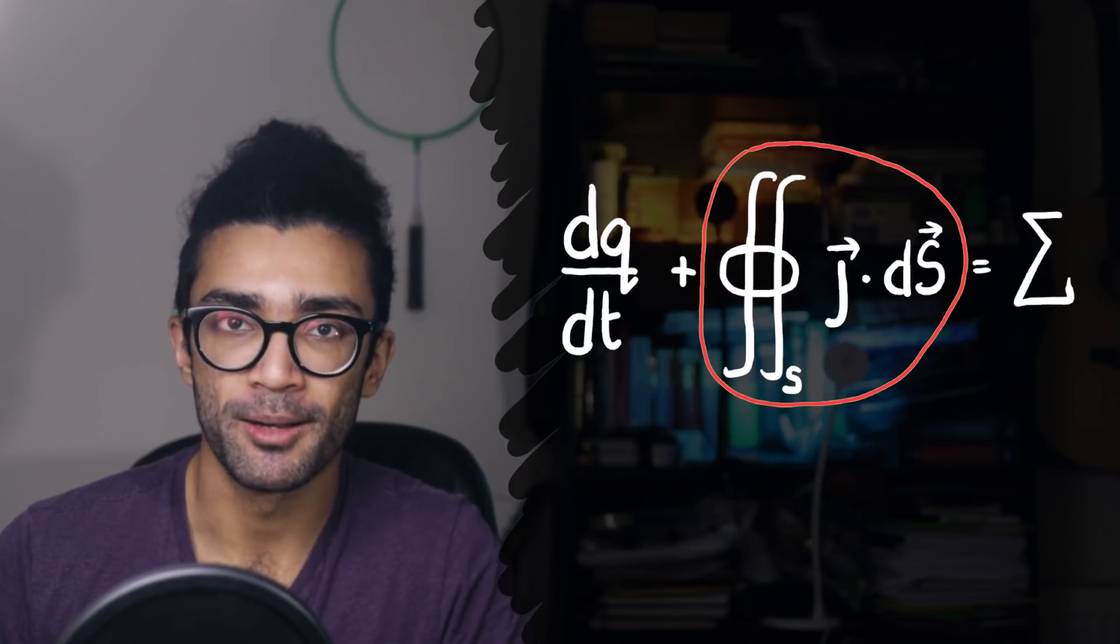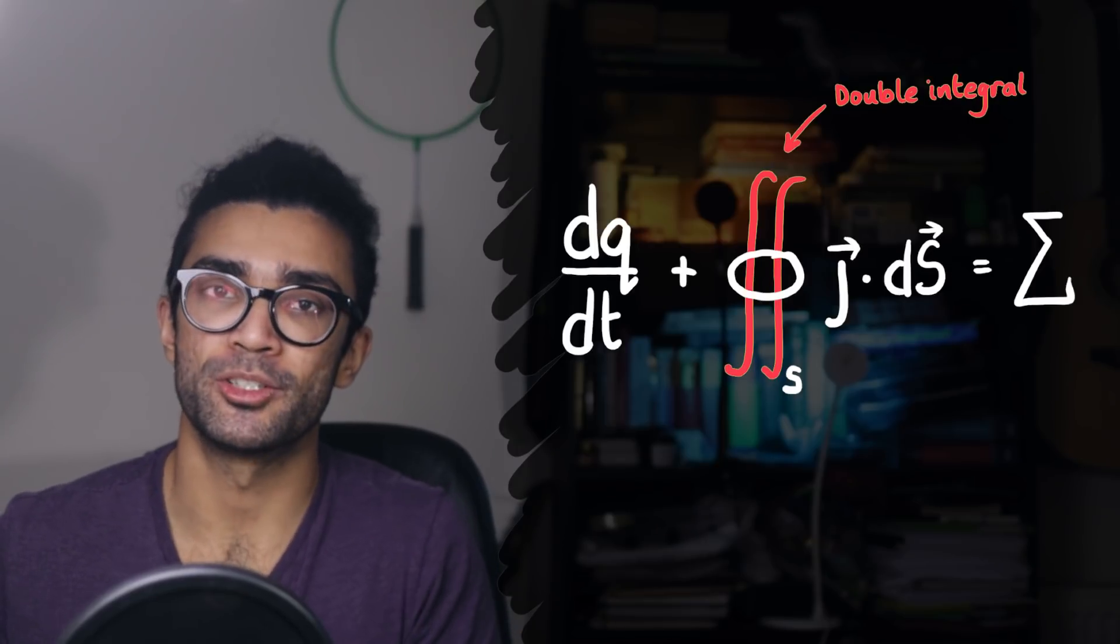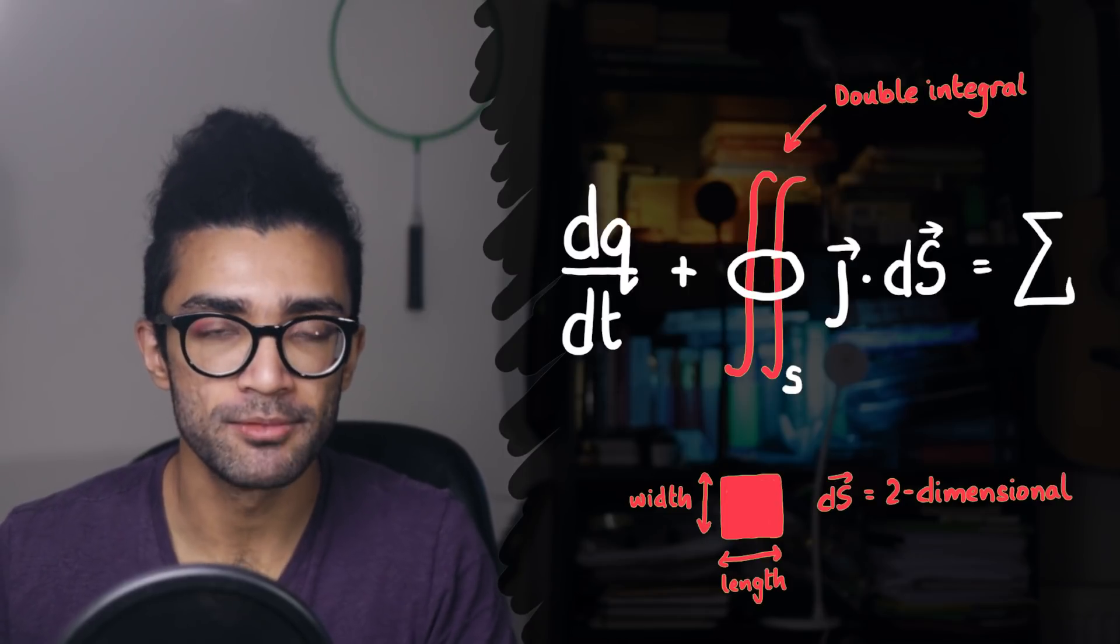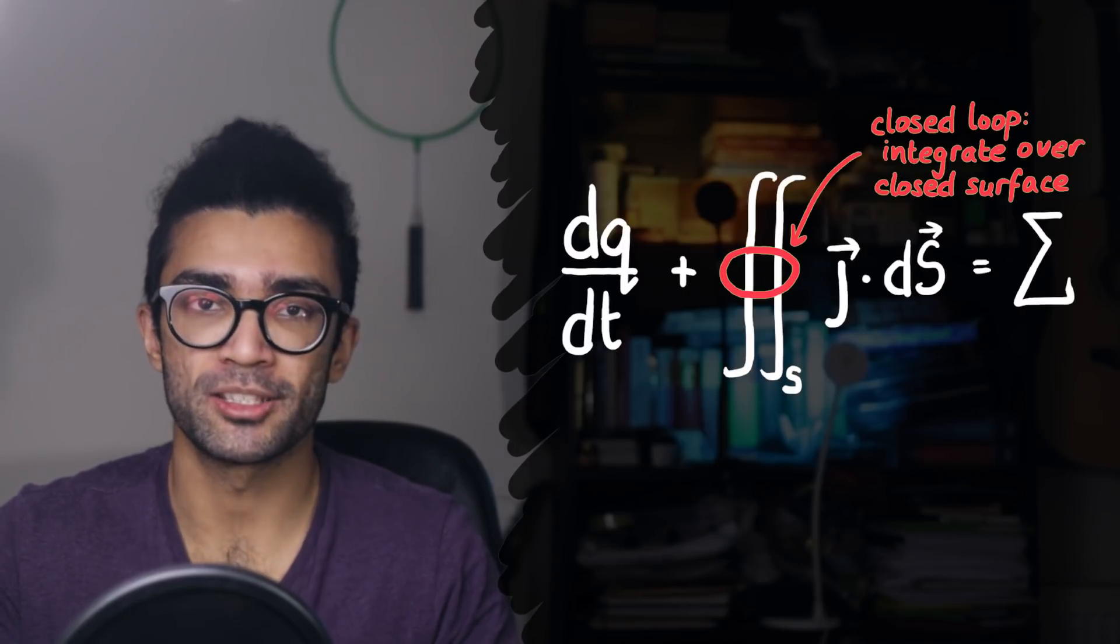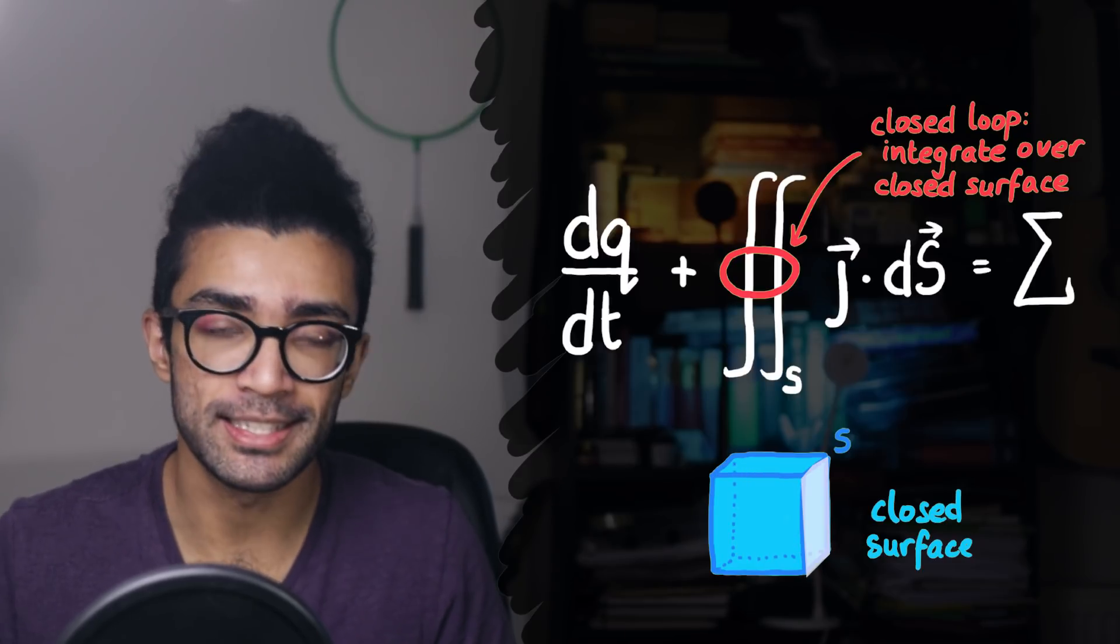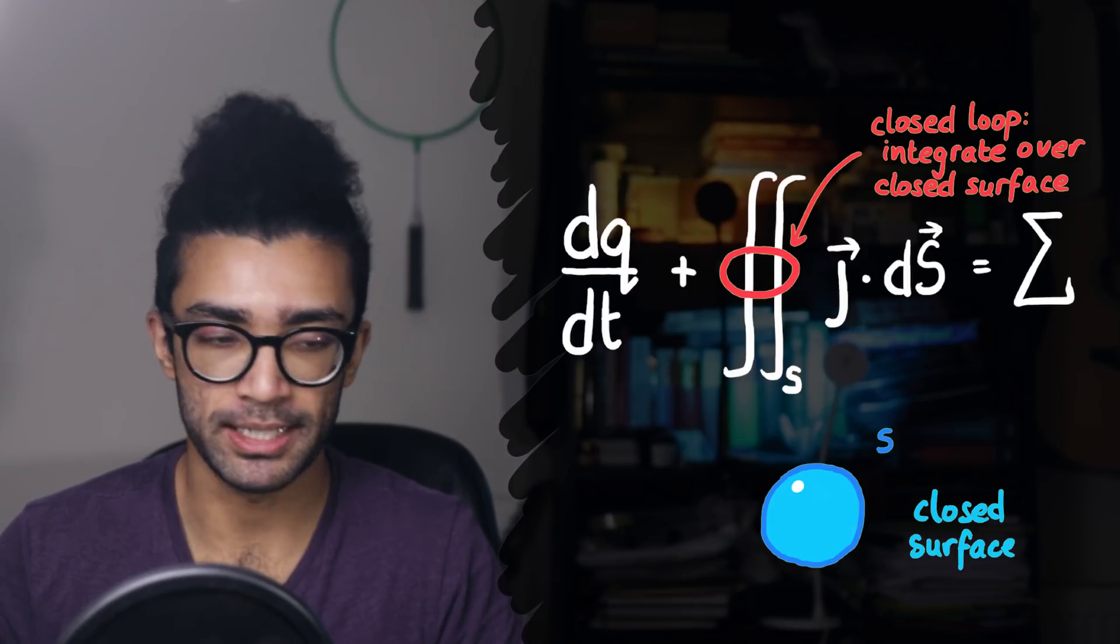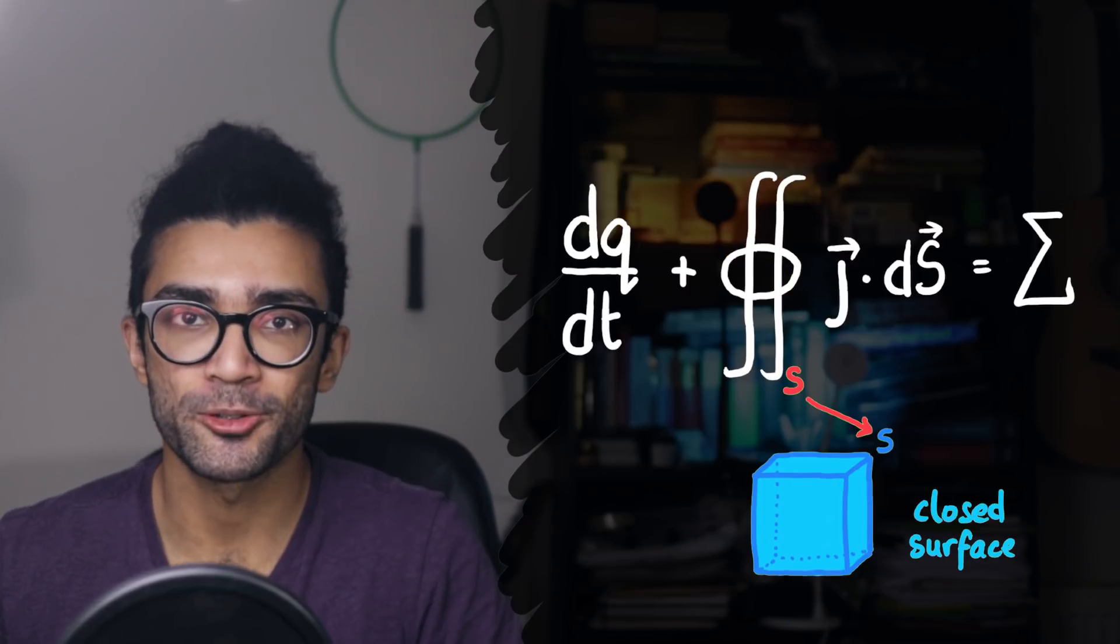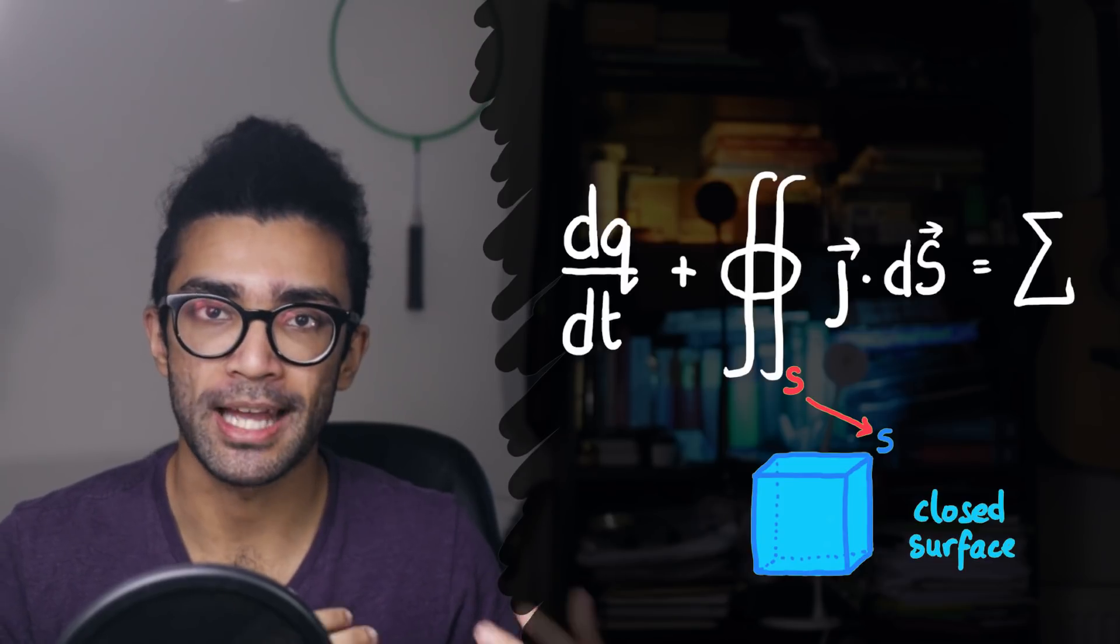A couple of other things to note about this term. Firstly, the double squiggly lines tell us that we're integrating over a two-dimensional surface, two-dimensional area. And this makes sense because all of our little area elements are indeed areas. They're two-dimensional. Secondly, this loop here, this closed loop, tells us that we're integrating over a closed surface. This is why we had to choose something like S, which is indeed a closed surface. We could have chosen, for example, a sphere or something that looks like this, but it has to be closed. There can't be any openings to it. And of course, the S near the integral sign specifically tells us that in this case, we are integrating over the surface we have called S.